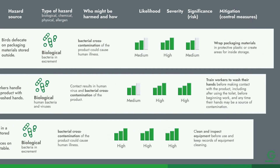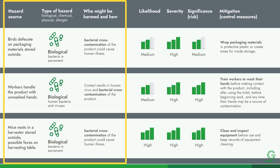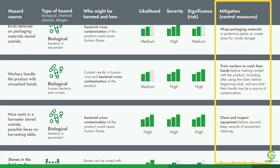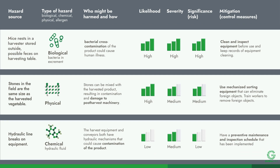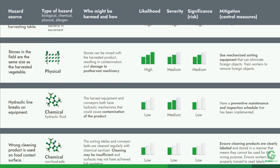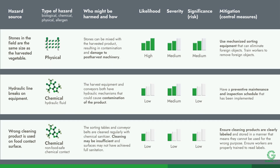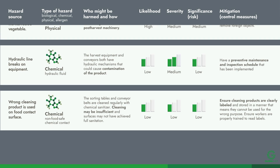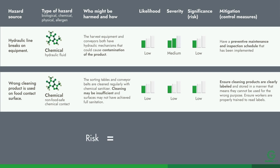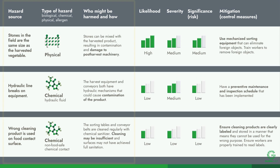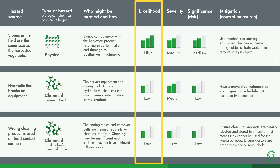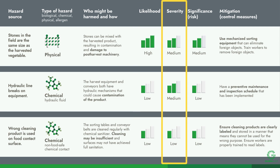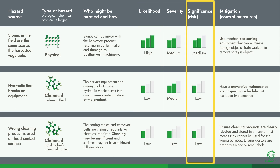Here is an example of how to document the hazards, risks, and mitigation strategies in the risk assessment. The format for documenting risk assessments will vary by standard, product, and type of production. It is helpful to remember that risk is equal to severity multiplied by likelihood. After identifying the hazards, assessing the likelihood that it will occur, and determining the severity, the producer can determine the significance or risk.